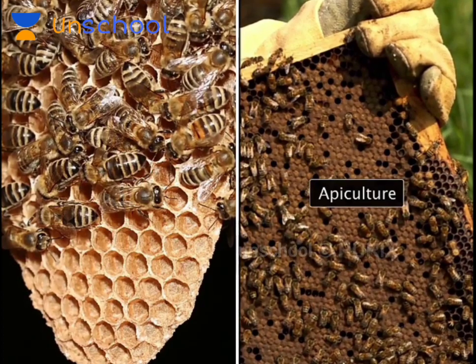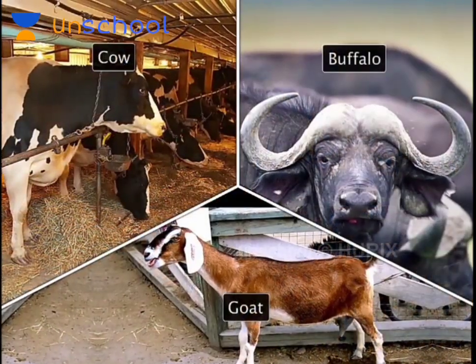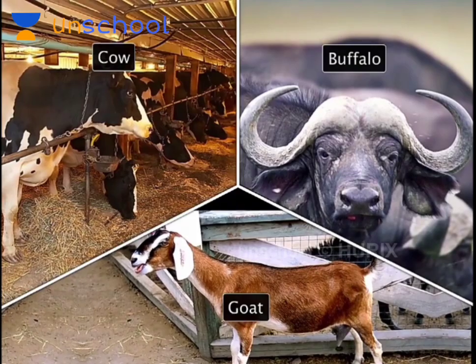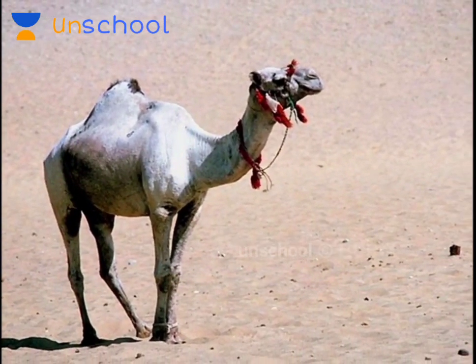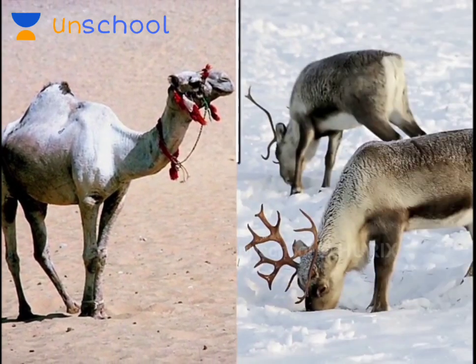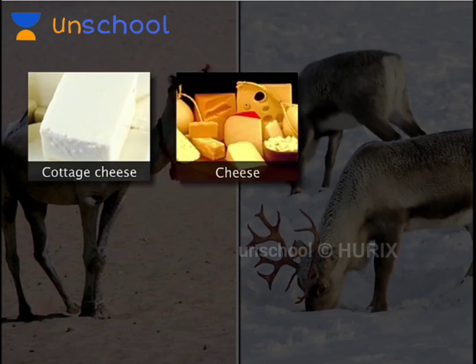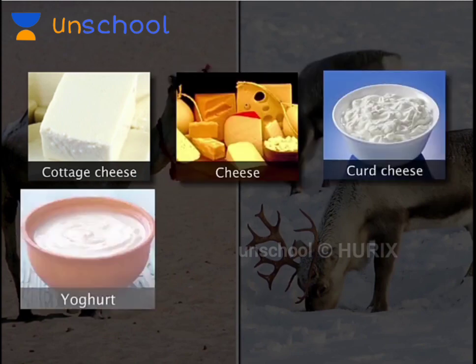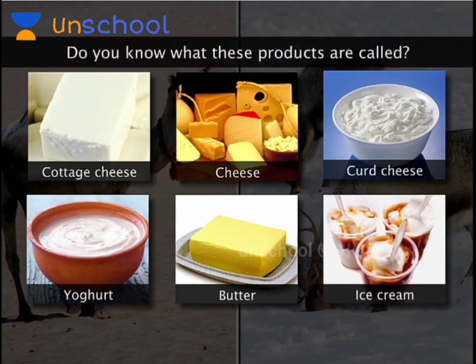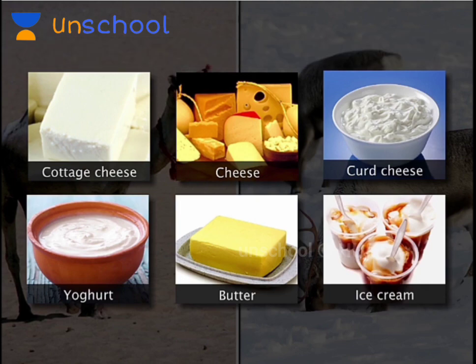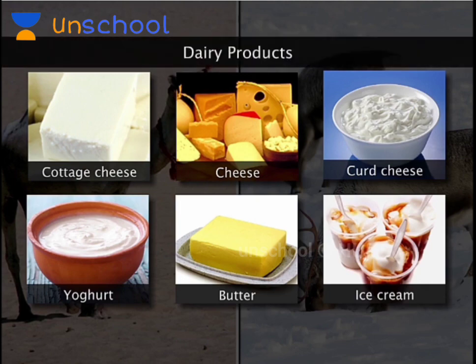Animals such as cows, buffalos and goats provide us with milk. In deserts, people consume camel milk, and people in the Arctic region use milk from the reindeer. Milk is also used to make many products such as cottage cheese, cheese, curd cheese, yogurt, butter and ice cream. These products are called dairy products.